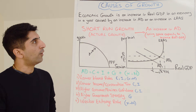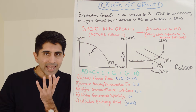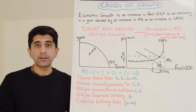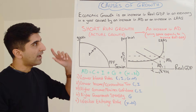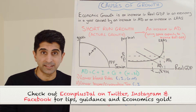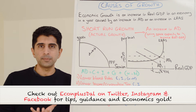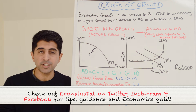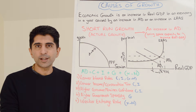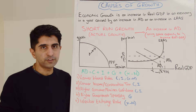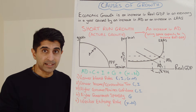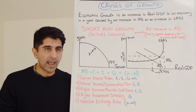Hi everyone. Economic growth is an increase in real GDP in an economy in a year, caused by an increase in aggregate demand or an increase in LRAS. That definition is brilliant because it does two things: it tells us what growth is — an increase in real GDP — and it gives us the two different causes: an increase in AD or an increase in LRAS.